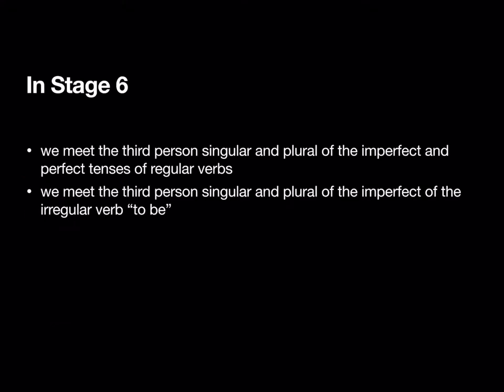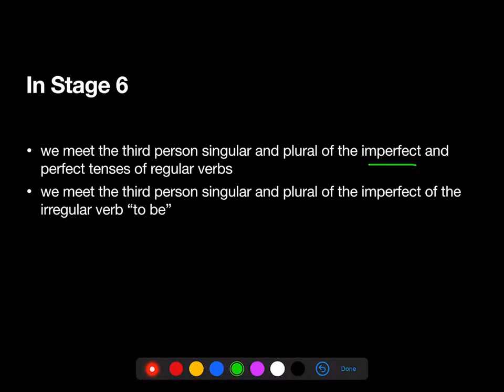Hi, and welcome to the Stage 6 review. In Stage 6, we met the third-person singular and plural of the imperfect and perfect tenses of regular verbs, and we met the third-person singular and plural of the imperfect of the irregular verb 'to be'.